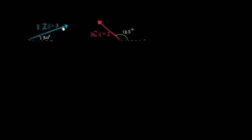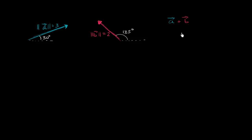We have two vectors here. Vector A has a magnitude of 3, so the length of this blue arrow is 3, and its direction forms a 30-degree angle with the positive x-axis. Vector B has a magnitude of 2, and it forms a 135-degree angle with the positive x-axis. What I want to think about in this video is the magnitude and direction of the sum of these two vectors — the magnitude and direction of vector A plus B. I encourage you to pause and try this on your own before I work through it.